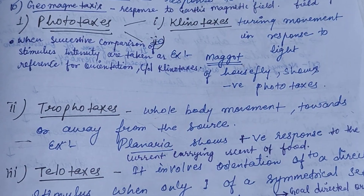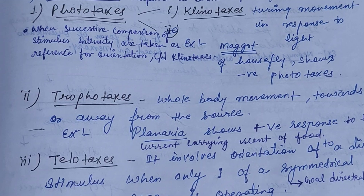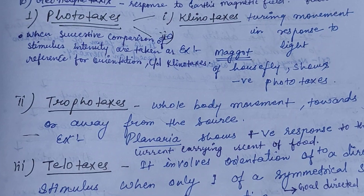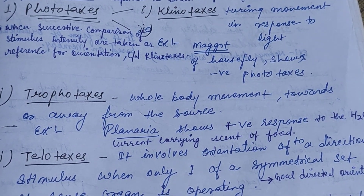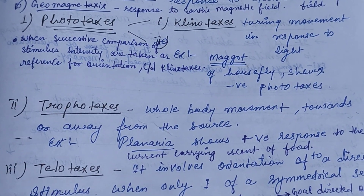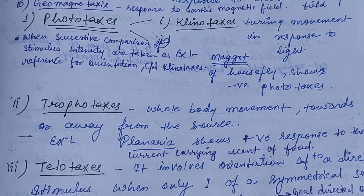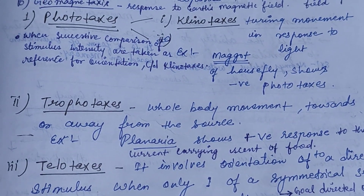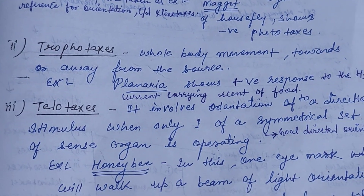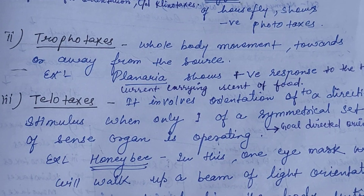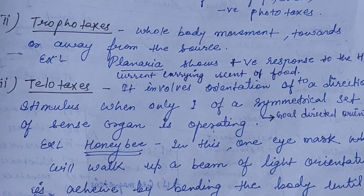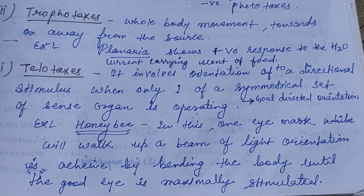Klinotaxis: when successive comparisons of stimulus intensity are taken as reference for orientation, it is called klinotaxis. Example: maggot larva of the housefly shows negative phototaxis. We can distinguish klinokinesis and klinotaxis — klinokinesis is movement towards or away from the stimulus, while klinotaxis is a turning movement in response to light. Tropotaxis involves whole body movement towards or away from the source. Example: Planaria shows positive response to water current carrying the scent of food.